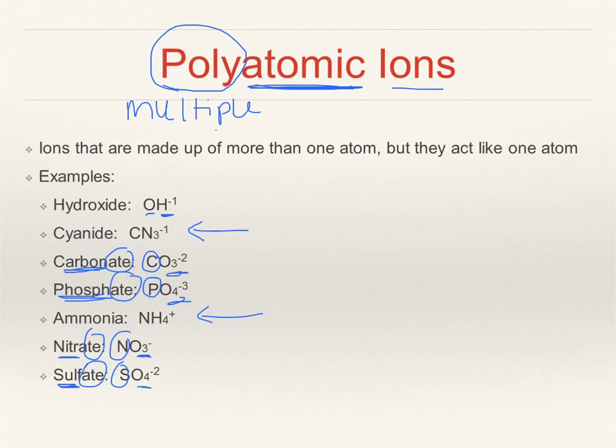This ends our first video on how we find ions and how we can identify them based on their location on the periodic table. Our second video is going to talk about how we form bonds between these ions. Please don't forget to watch that video and come into class ready to show me all your notes filled in.